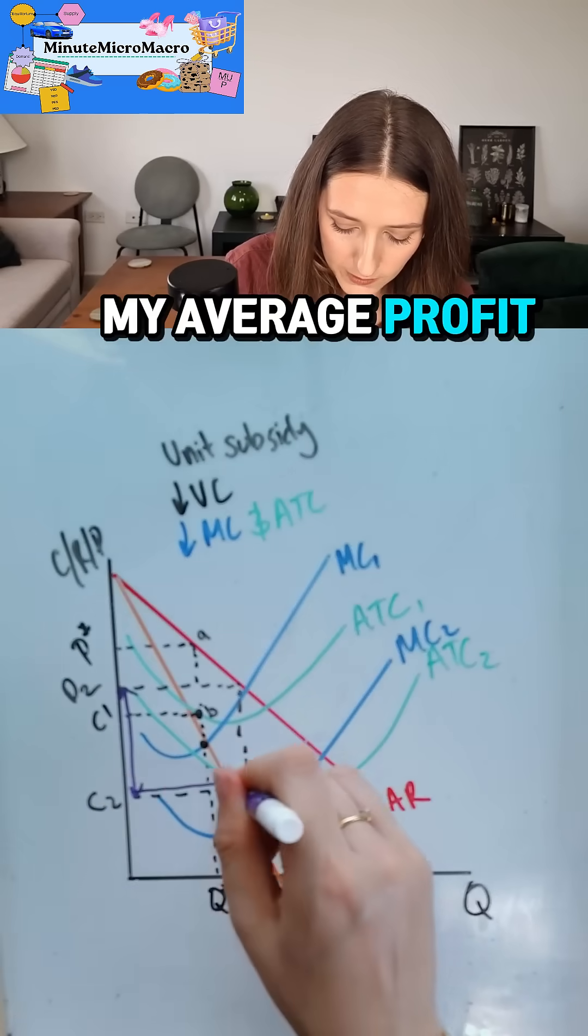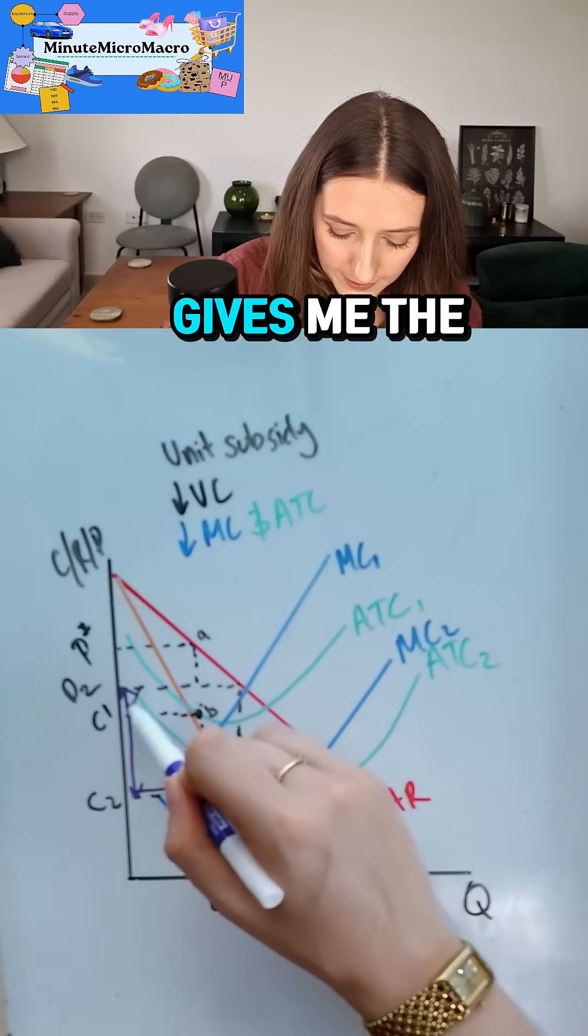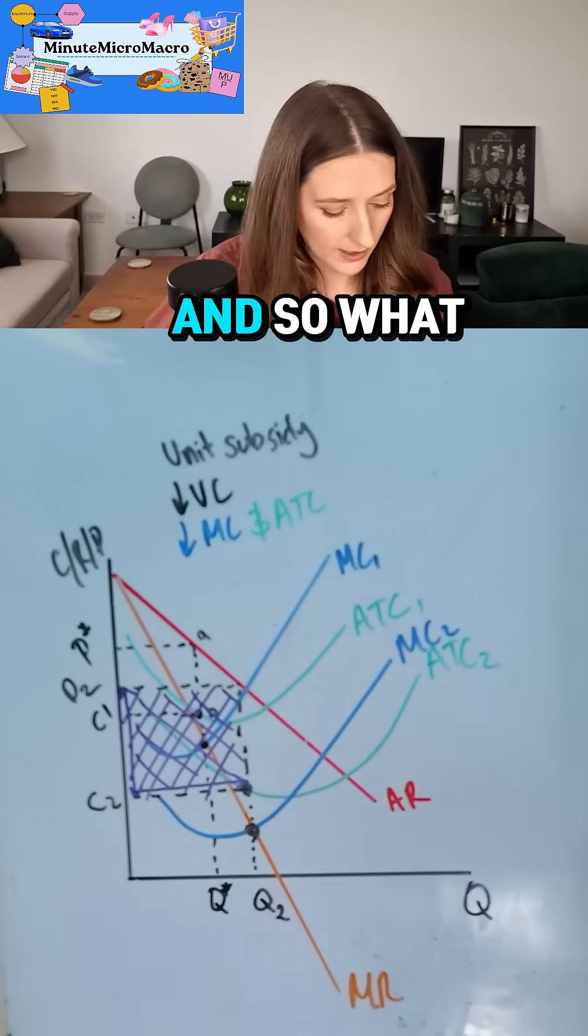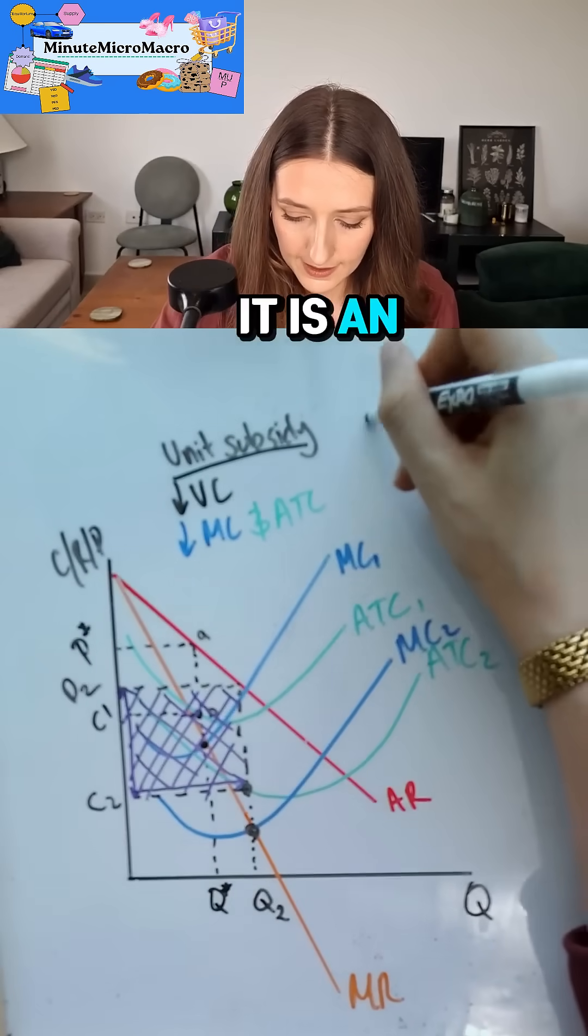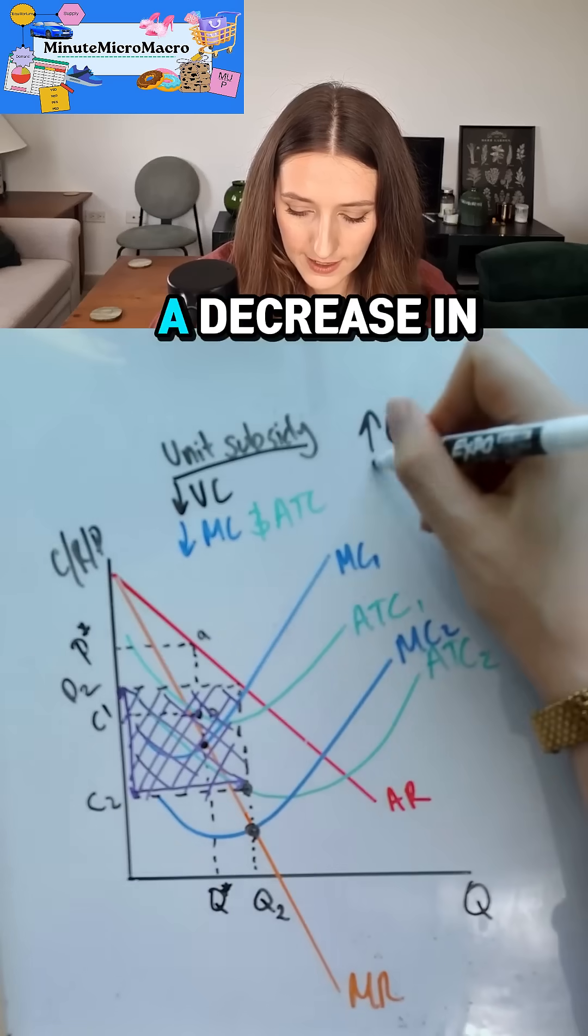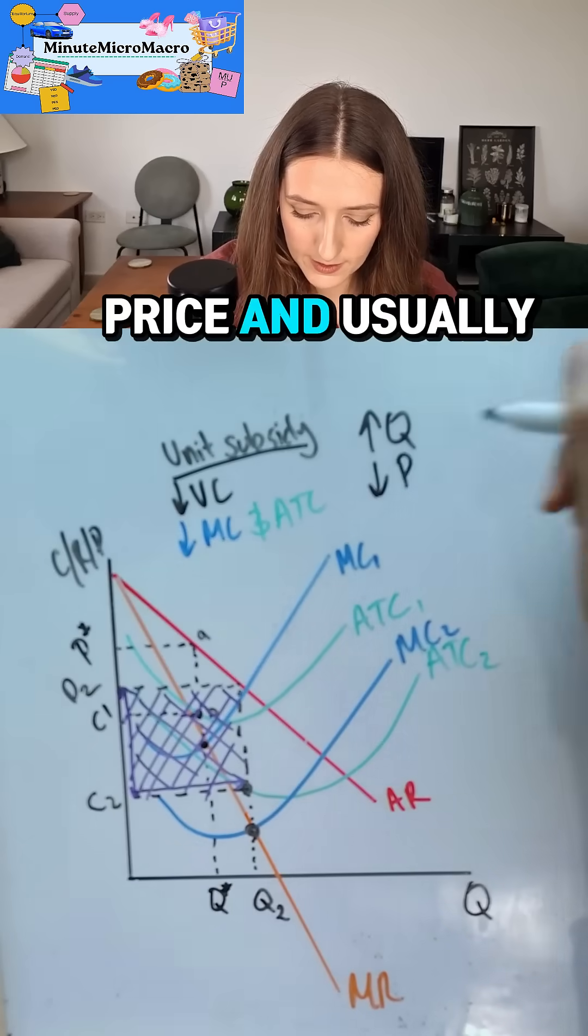So the difference between my price and my cost is my average profit. My average profit multiplied by quantity gives me the total profit made.